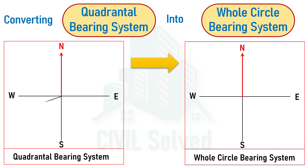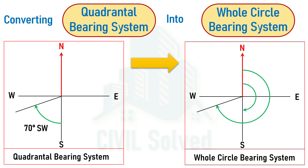If we have been given a line in the southwest quadrant with a bearing of 70 degrees Southwest, and asked to convert it to the whole circle bearing system, the same line is drawn and the angle is measured from north clockwise. The angle from north to south is 180 degrees, and the angle from south to the line is 70 degrees. So the angle in WCB = 180 plus 70,